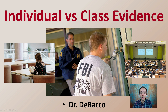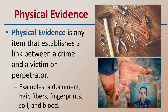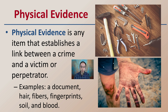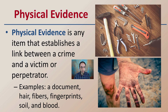When we're looking at evidence in general, we want to keep in mind that typically we're looking at this general category of physical evidence. Physical evidence is any item that can be established as a link between the crime and a victim or the perpetrator. Examples are documents, hair, fibers, fingerprints, soil, and blood — all falling in the category of physical evidence.